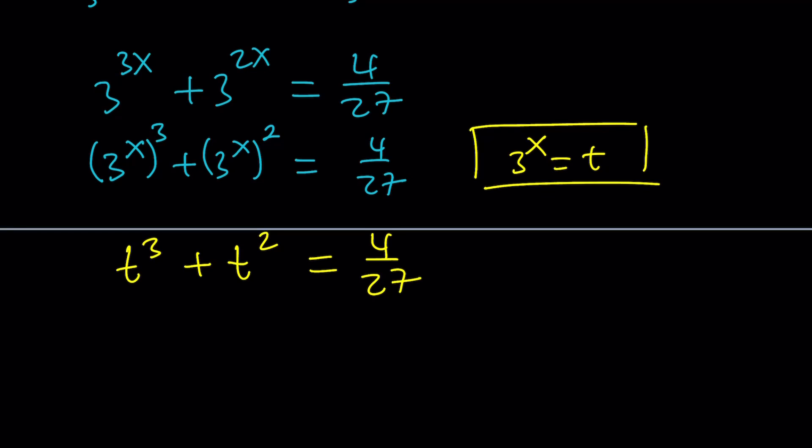Let's replace 3 to the x with that. We get t cubed plus t squared equals 4 over 27. This might look like a difficult problem because, first of all, it's cubic. And cubic formula is somewhat complicated. Actually, it's not that complicated. We've done quite a few of those. And the second is we have a fraction on the right-hand side.